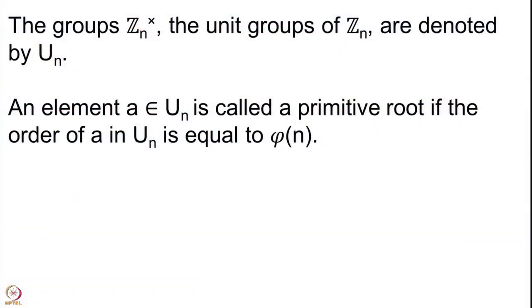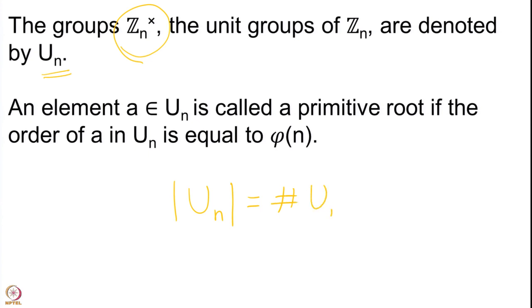These are the groups U(n), which denotes the group (Z/nZ)×. These are the groups we are studying, where n is a natural number, and we want to study when exactly these groups are cyclic. The cardinality of U(n), also denoted by the Euler phi function evaluated on n, is φ(n). To say that this group is cyclic means to say that there is an element whose order is exactly equal to the order of the group.